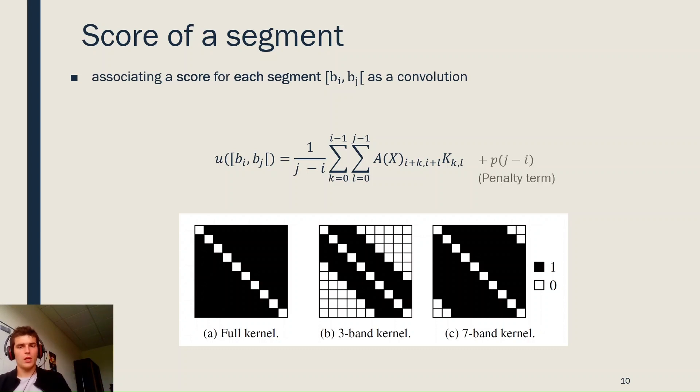To this convolution score, we add a penalty term which will enforce some segment sizes in particular, given prior knowledge.